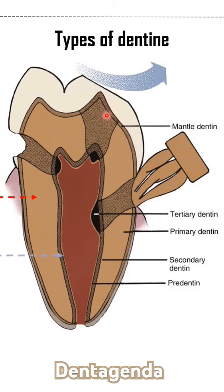2. Secondary dentine: it forms after the complete root formation and deposits around the pulp roof and chamber, leading to its asymmetric size reduction or recession by age.